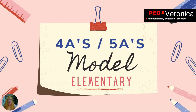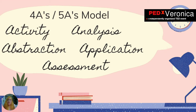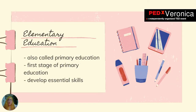Good day! Now we will look into how the 4A's or 5A's model is applied in elementary education. The five components are activity, analysis, abstraction, application, and assessment. Elementary education, also known as primary education, is the first stage of formal education, primarily concerned with providing basic education, developing knowledge, skills, attitudes, and values essential to personal development and contributing to a developing society.